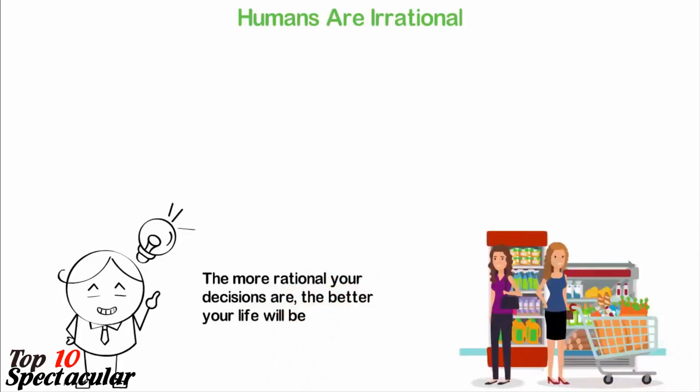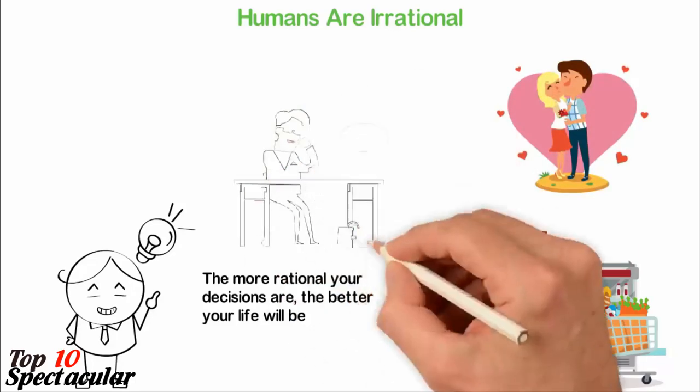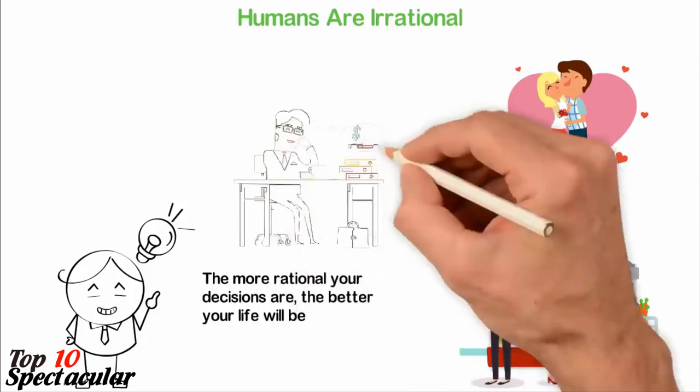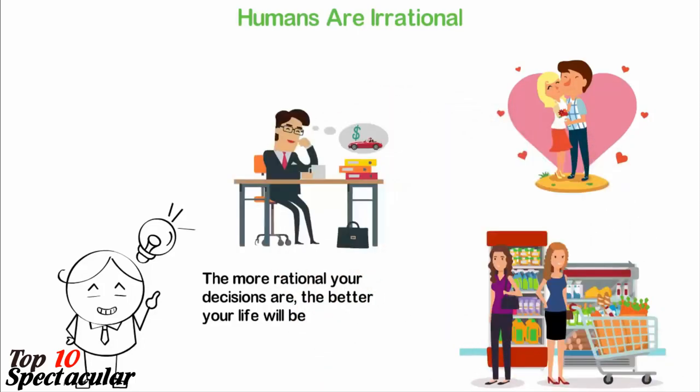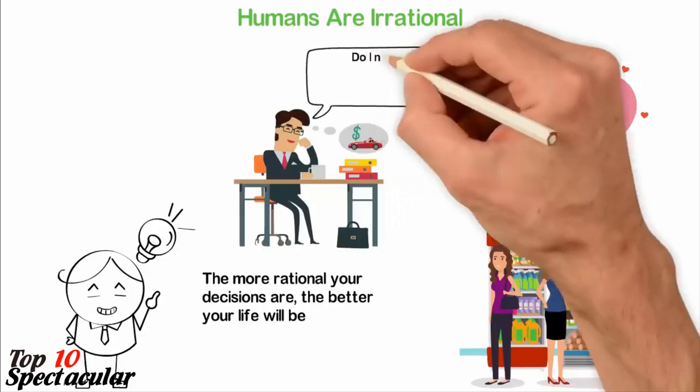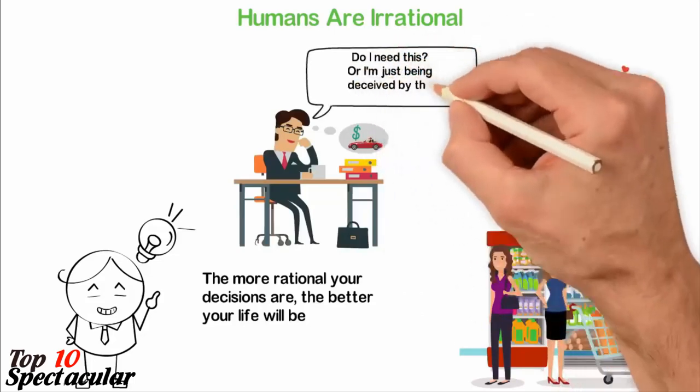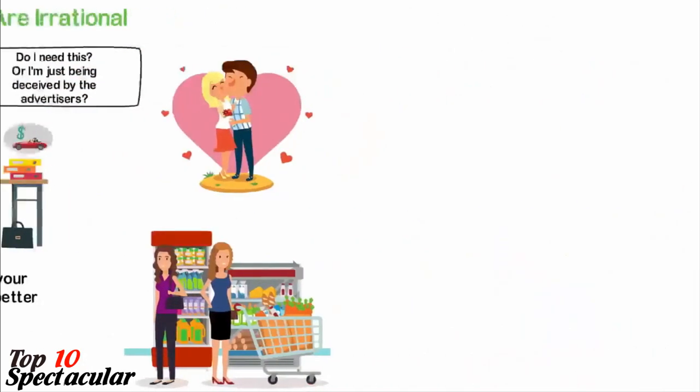Think about things we purchase. Think about the partners we married. Think about the most important decisions of our lives and you'll see how irrational we are. If you know you're irrational, then you'll pause and think before you buy those new phones, clothes, or shoes. Do you really need them or you're just being deceived by the advertisers?